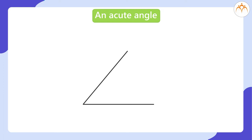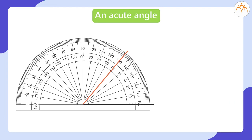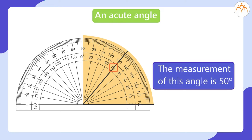An Acute Angle. Let us match the baseline of the protractor and the horizontal arm of the angle to each other. Match the midpoint of the protractor and the vertex of the angle to each other. Now look at the other arm of the angle — it is pointing a number on the protractor on the right side of 90 degrees. The arm of the angle aligned to the baseline extends towards the left side, so you can read the measurement from the right side of the midline of the protractor. The number pointed by the arm is 50, so the measurement of this angle is 50 degrees.